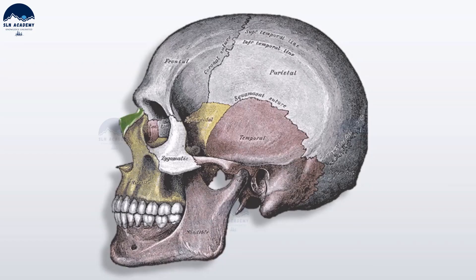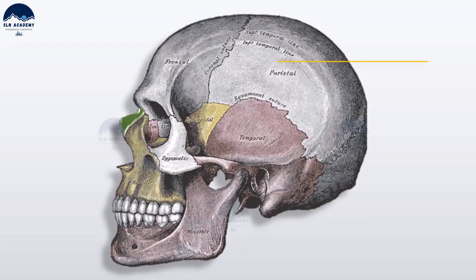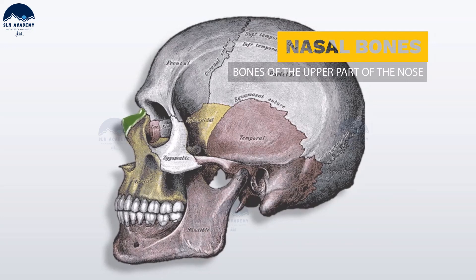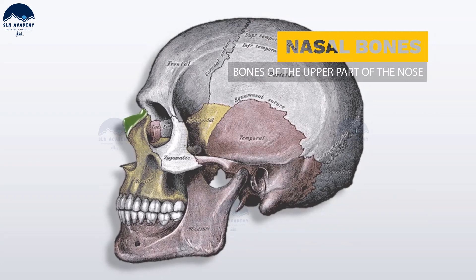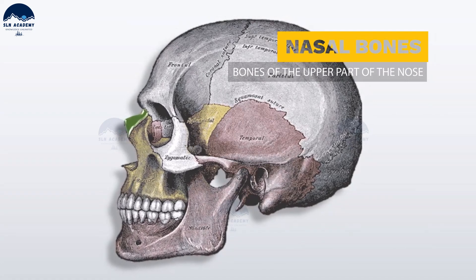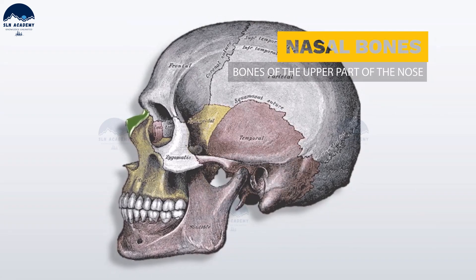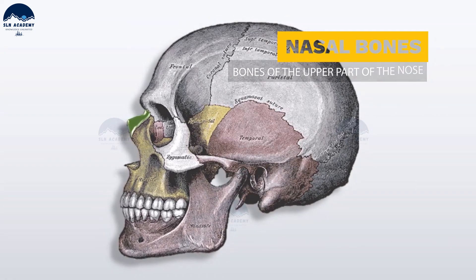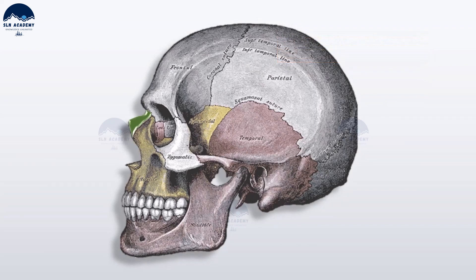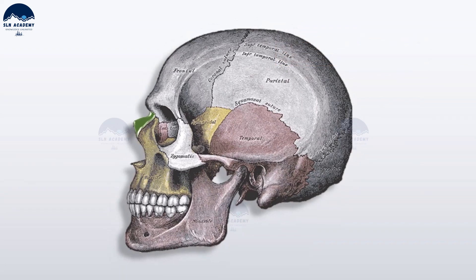Nasal bones. There are two nasal bones which act as the bridge of the nose. They are the bones of the upper part of the nose.